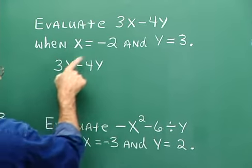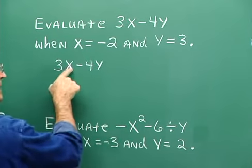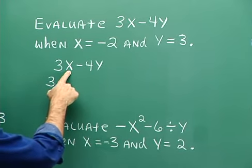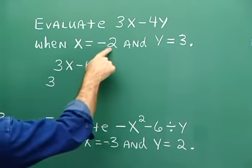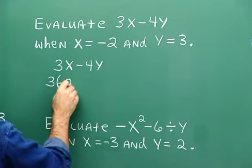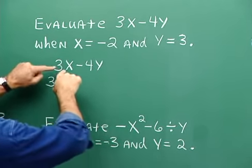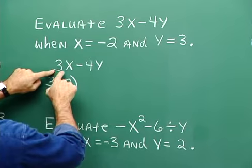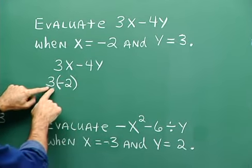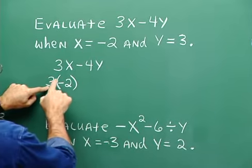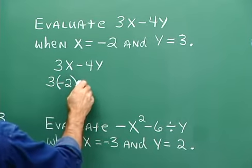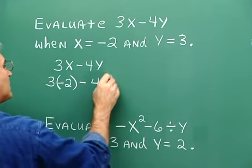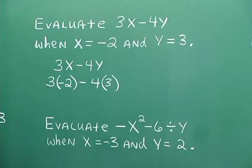When we replace this x with negative 2, remember that 3x means 3 times x. So we want to indicate 3 times the number that x stands for. It's negative 2, so it's 3 times negative 2. We need to introduce the parenthesis to indicate the multiplication. This doesn't say 3 minus x or 3 plus x, so we certainly wouldn't want this to say 3 minus 2 — it's 3 times the negative 2. Then minus 4 times whatever y is. y is 3. So we introduce those parentheses when multiplication is indicated.